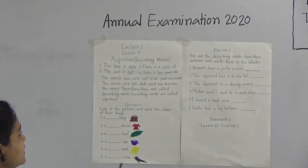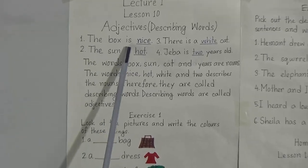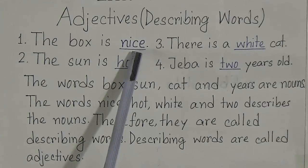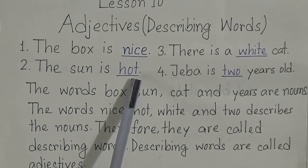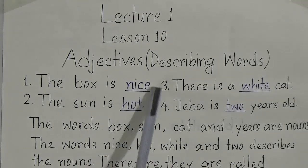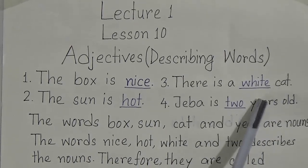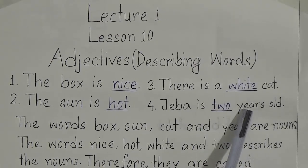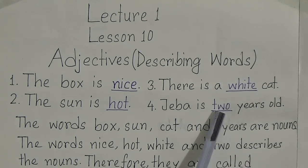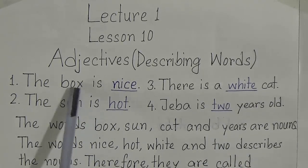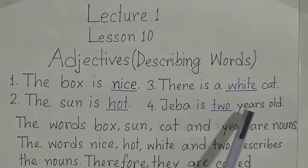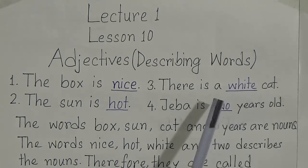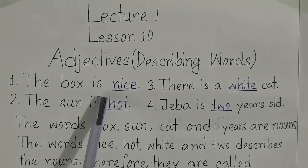Now first, look at these examples. The box is nice — how is the box? The box is nice. Number two: the sun is hot — how is the sun? It's hot. Number three: there is a white cat — what is the color of this cat? White. Jeba is two years old — how old is Jeba? She is two. Now look: the words box, sun, cat, and years are nouns, and the words nice, hot, white, and two describe those nouns.